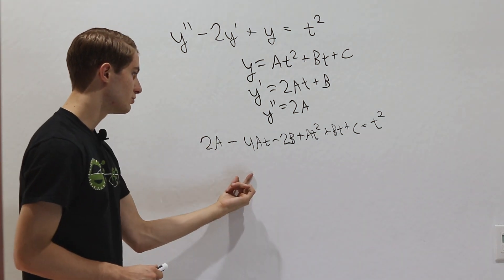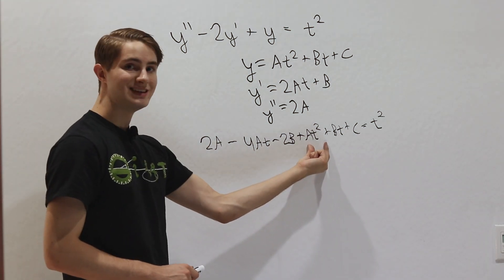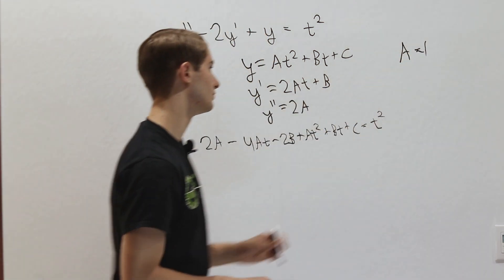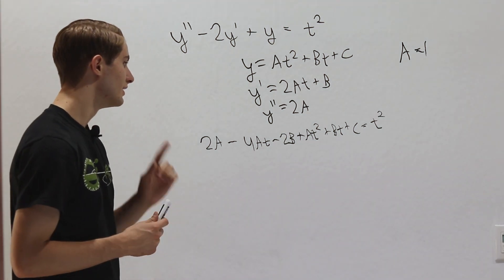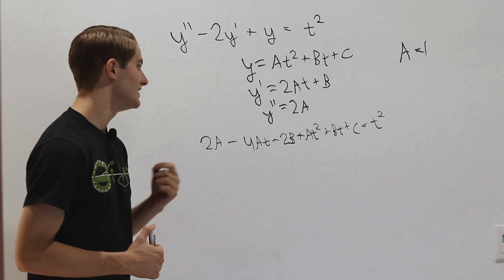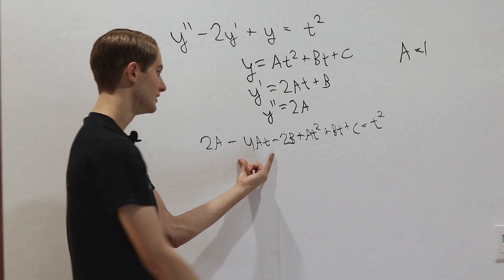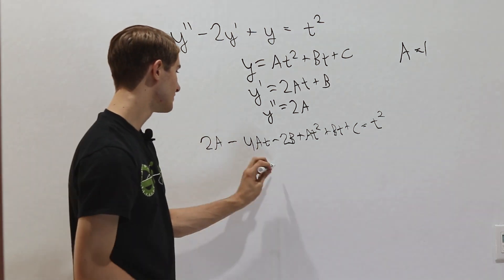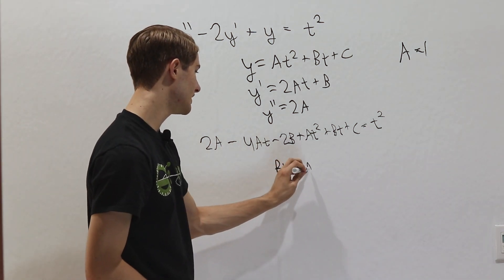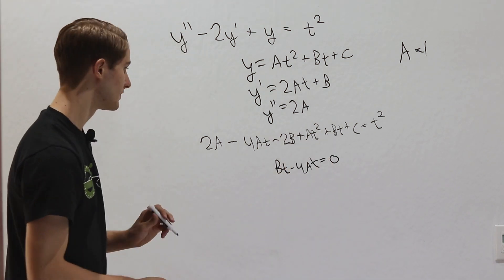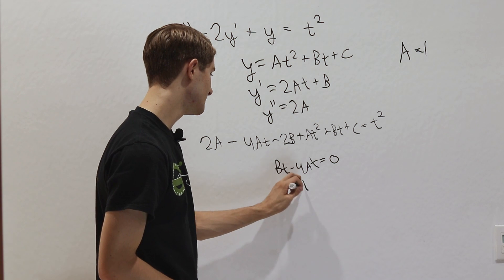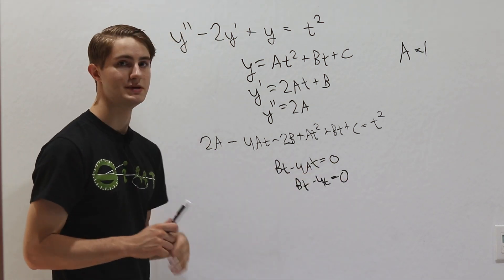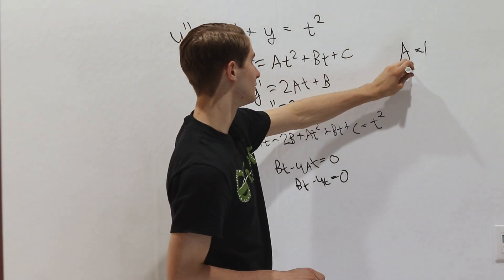Looking at the left side, the only t squared term is at squared, which must equal t squared, so a equals 1. For the t terms, 4at and bt must cancel out, meaning bt minus 4at equals 0. Since a equals 1, we get bt minus 4t equals 0, so b must equal 4.